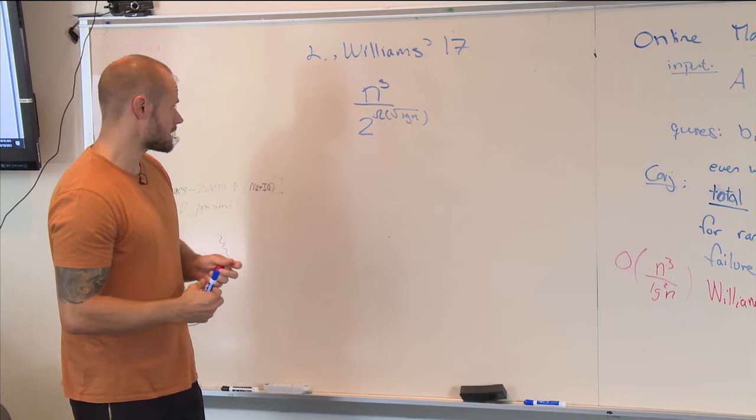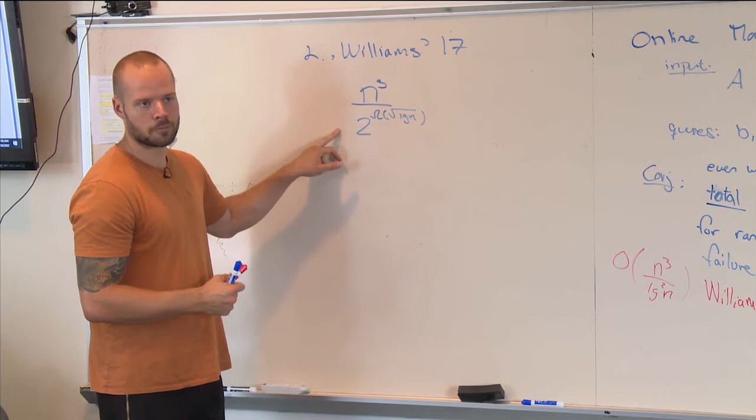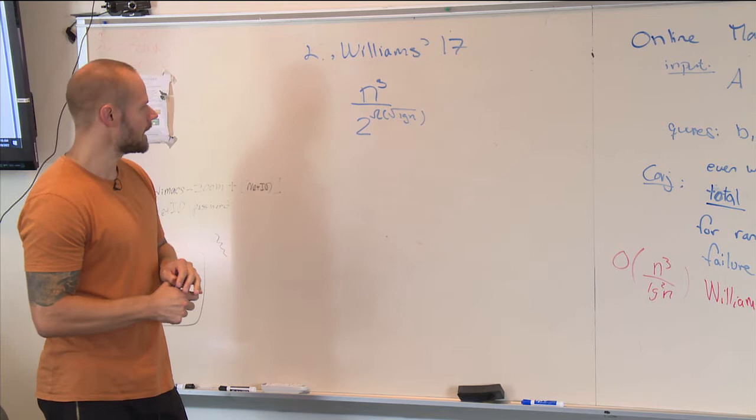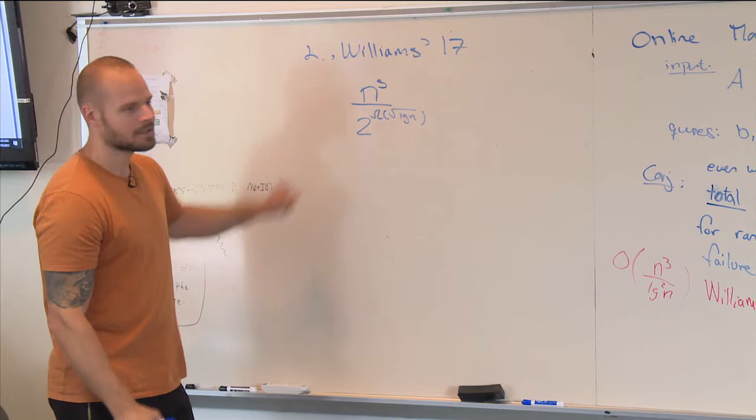The very interesting thing is that in this data structure, the first couple of queries are not solved in n² over 2 to the √(log n). There's a bunch of queries in the beginning that actually take n² time to answer. Then after a little while it gets faster — it answers queries in n² over 2 to the √(log n). So it actually uses amortization to beat the n³ barrier.